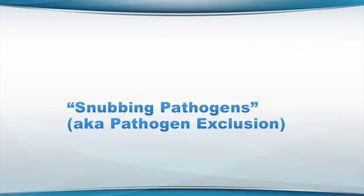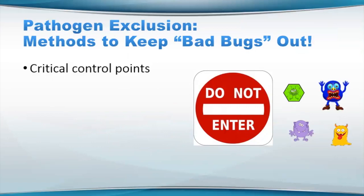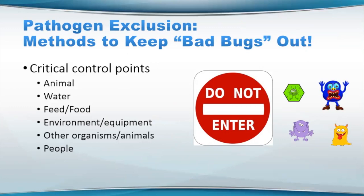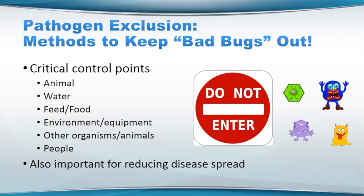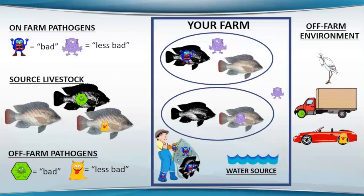Now we're going to talk about snubbing pathogens or how we can exclude these pathogens. Some of the methods to keep some of these bad bugs out include looking at critical control points — points where your protocols and procedures are going to be able to do this exclusion. So you're going to be looking at animal sources, looking at water, looking at feed and food, looking at the environment and equipment and other organisms on the facility or that may be coming on the facility. And of course, people. These are all the critical control points that need to be examined, both for exclusion and for trying to biocontain or prevent things from spreading.